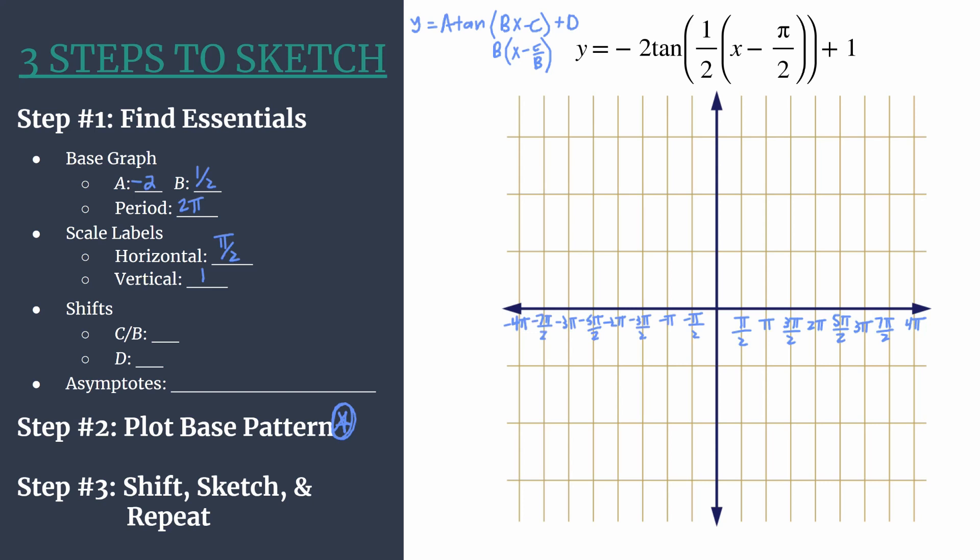So here's what the negative side of the axis looks like. All the same values, just negative. And we can label our vertical axis counting by ones. So easy enough, 1, 2, 3, negative 1, negative 2, negative 3.